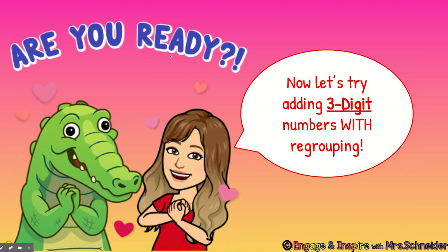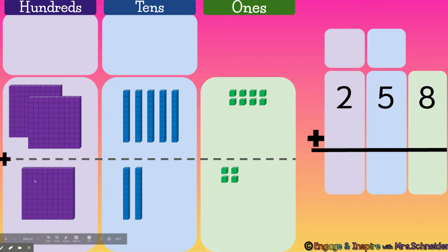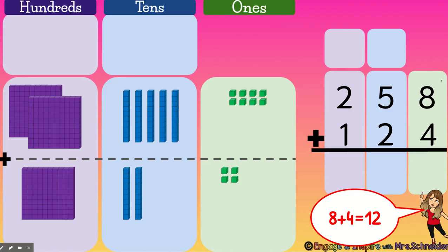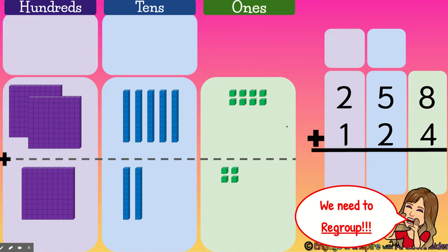All right, are you ready? Now let's try adding three-digit numbers with regrouping. Here we have the problem 258 plus 124. To solve this problem we're going to start on the right in the ones place. Eight ones plus four ones equals 12 ones. And we know that we usually represent 12 with a tens rod and two ones — we need to regroup.